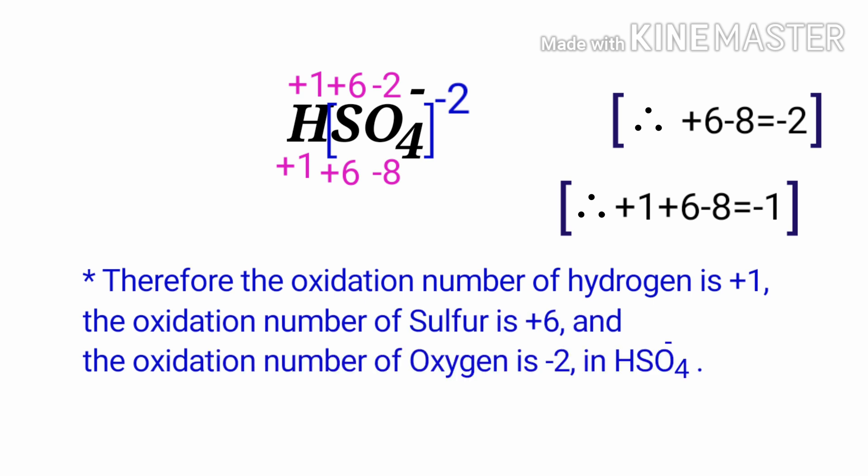Therefore, the oxidation number of hydrogen is plus one, the oxidation number of sulfur is plus six, and the oxidation number of oxygen is minus two in hydrogen sulfate.